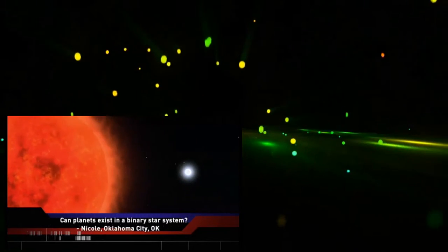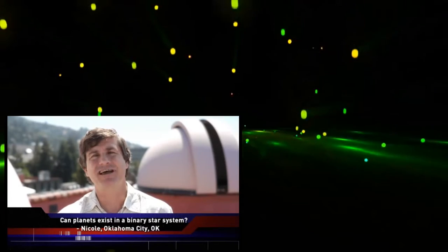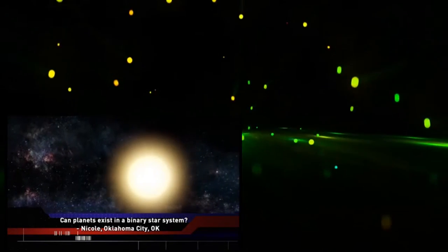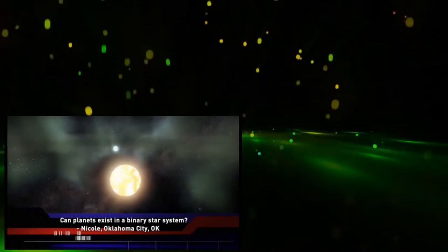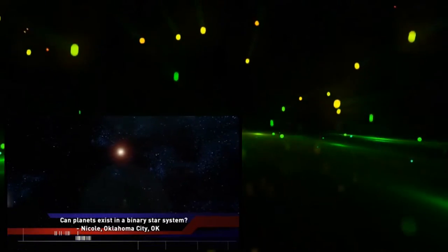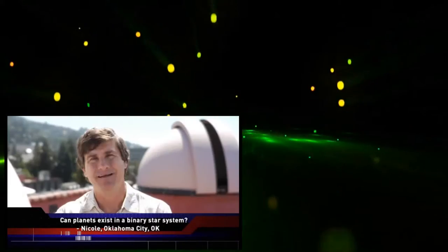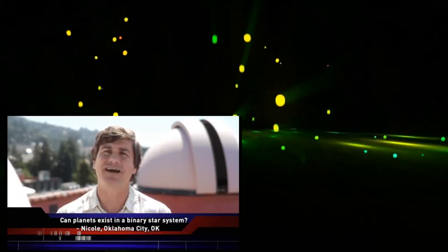She wrote, can planets exist in a binary star system? Nicole, that's a really cool question. It turns out that a planet in a binary system can orbit either one of the two stars very closely, or it can orbit both of them from very far away. But it can't orbit among them. That trajectory is unstable.